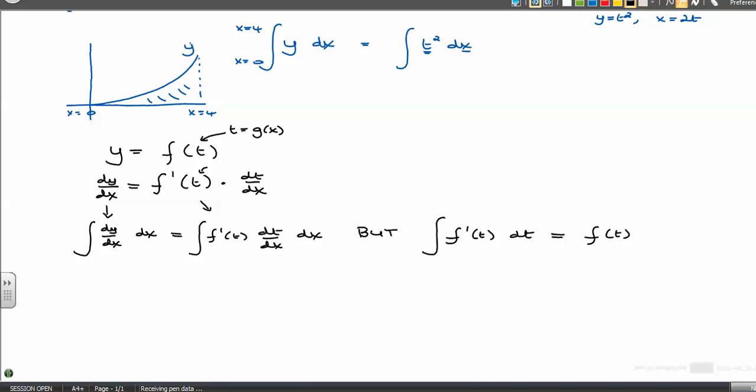And then plus a constant, but I'll ignore the constant. So it must be true that the integral of f'(t) dt/dx dx is equal to the integral of some function f'(t) dt. And they're both equal to y. So it almost works like a fraction. So it works as if this dx and the dx cancel out like a fraction.